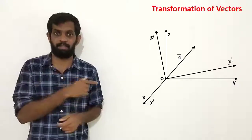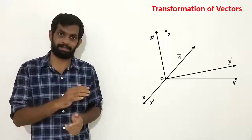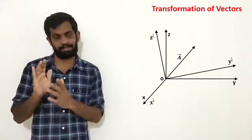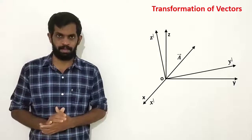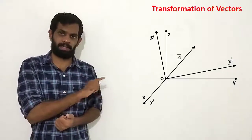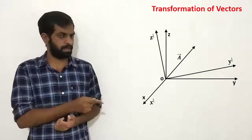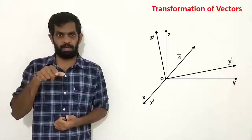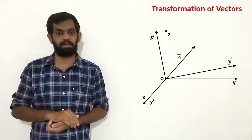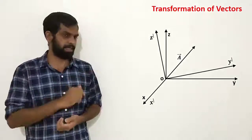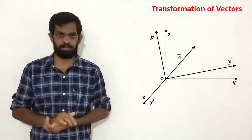When we rotate about the x-axis, the x-axis remains the same. The new coordinate is X-bar, Y-bar, Z-bar, where X-bar coincides with X since we rotated about the x-axis.